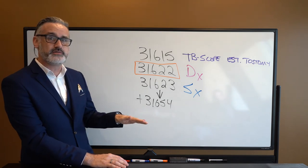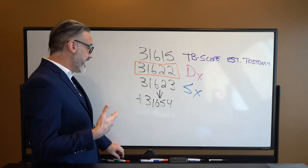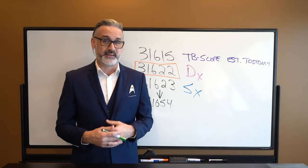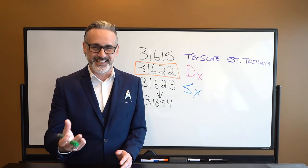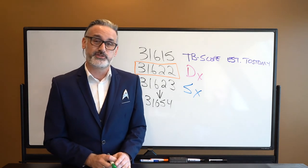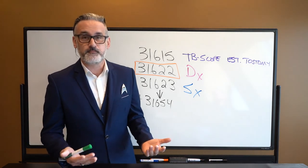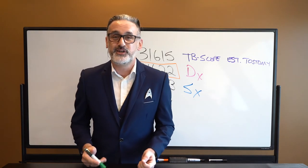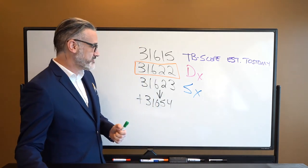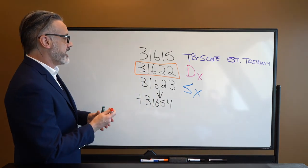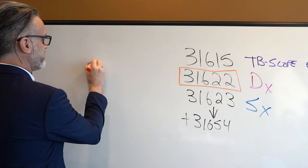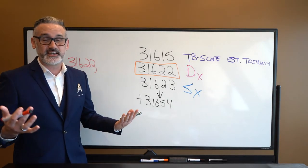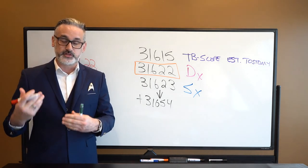We have one parent code and all these kit codes. Going back to the rule: a surgical scope always includes a diagnostic scope when performed. In coding, the only time we're going to code 31622 alone is when that's all the doctor does — the doctor performs a diagnostic scope, finds nothing wrong, and there's no need to do a surgical scope. We code 31622 and that's it. But if the doctor does a diagnostic scope first and then, say, 31640 where the doctor sees a tumor they want to excise, the doctor does all the work for the diagnostic scope and then performs 31640 to excise that tumor.